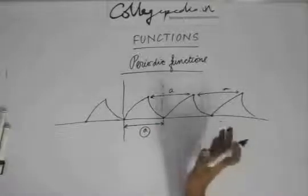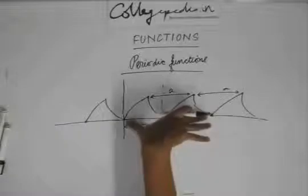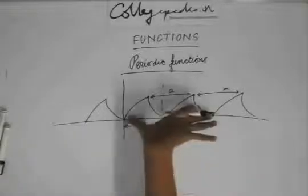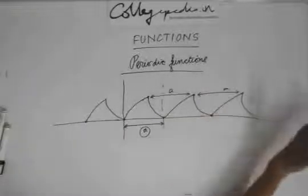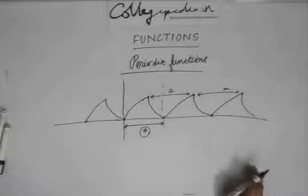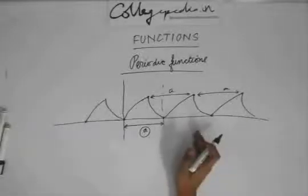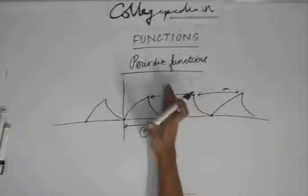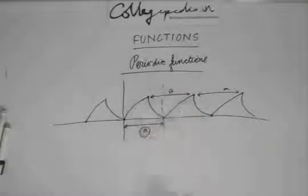Now, I could have said that the period of this function is 2A, because you can see that the function repeats after the interval of 2A also. But to find the period of the function, we should take the minimum value of A. So the minimum value in this case is A, so A is the period of the function.